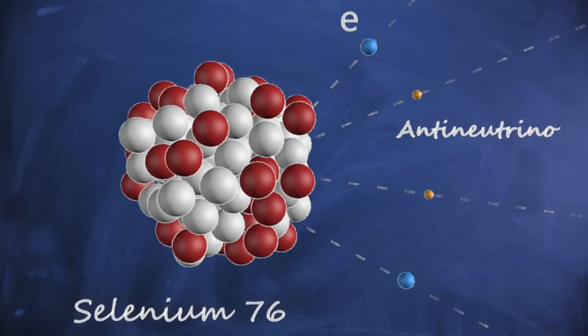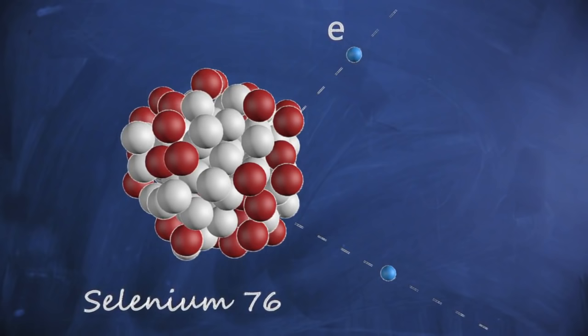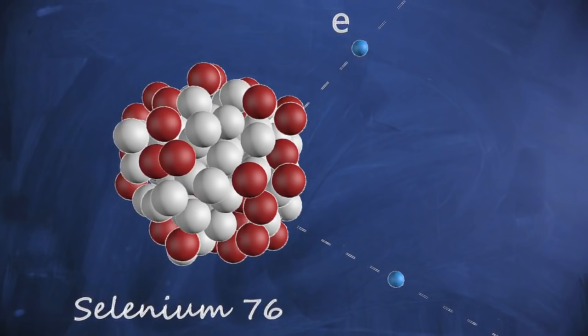A third, as yet unobserved channel, is neutrinoless double beta decay. For this decay to exist, the neutrinos must annihilate each other, a process which requires the neutrino to be its own antiparticle, and hence a distant type of matter to all other particles.